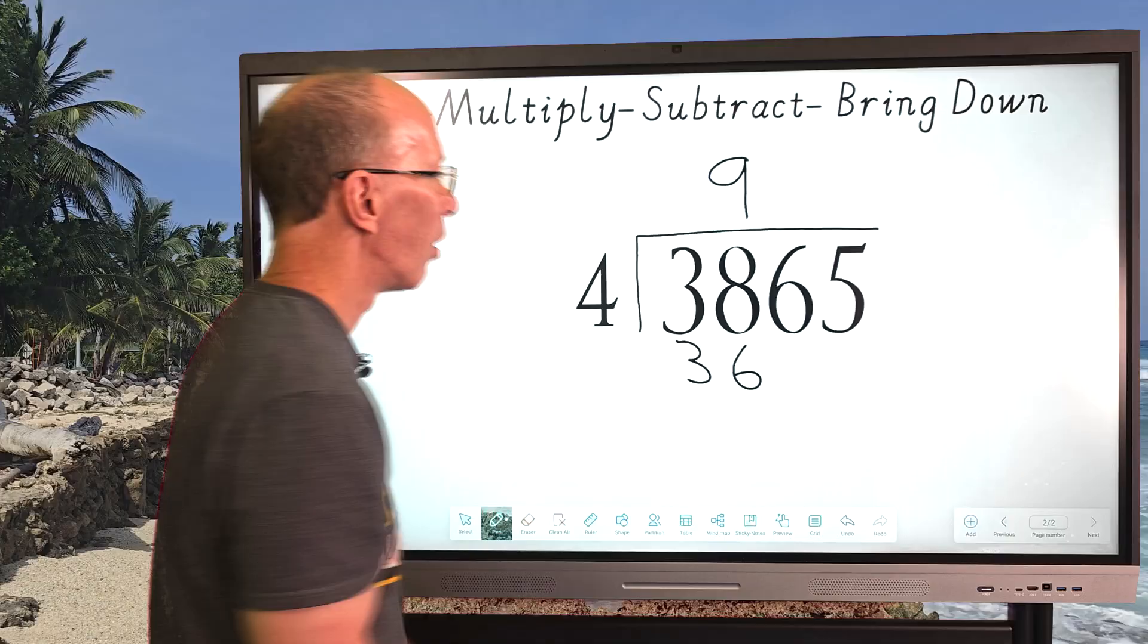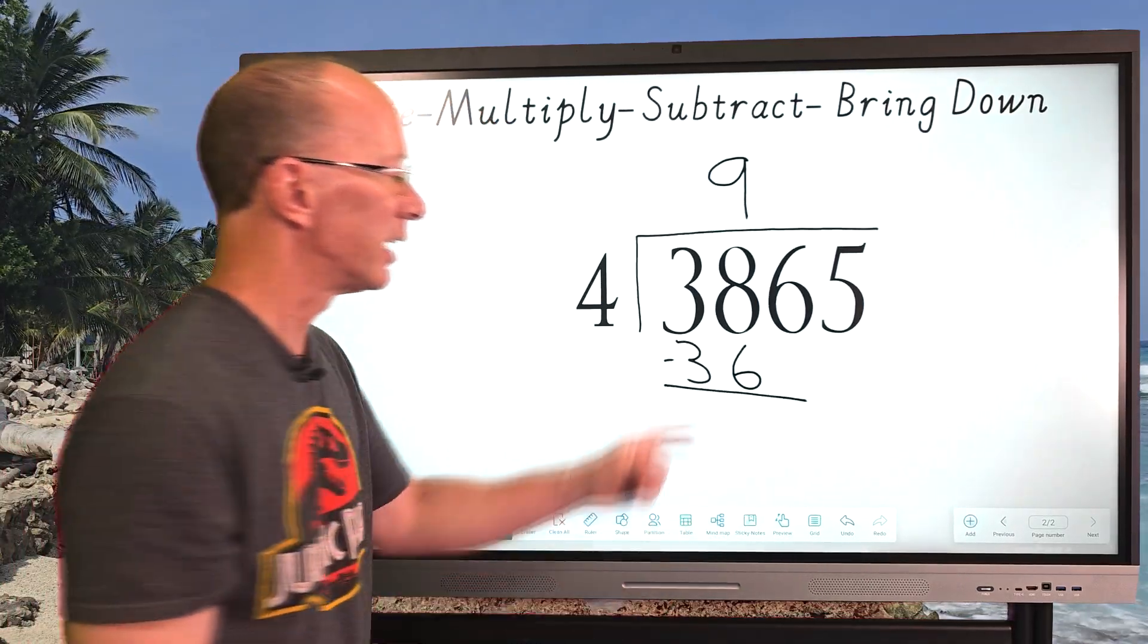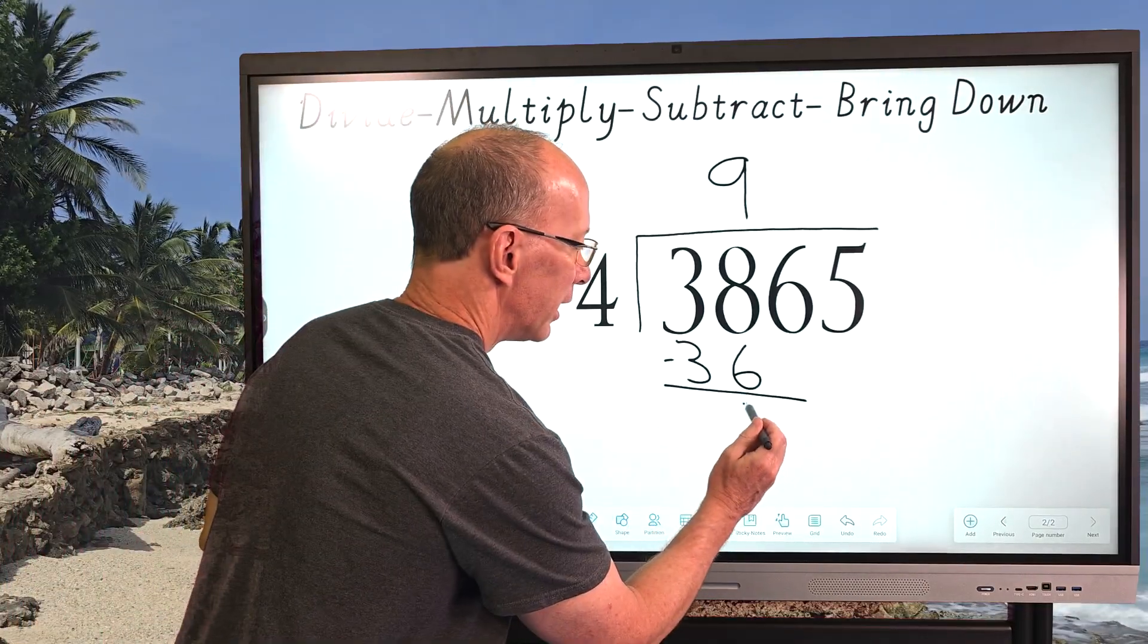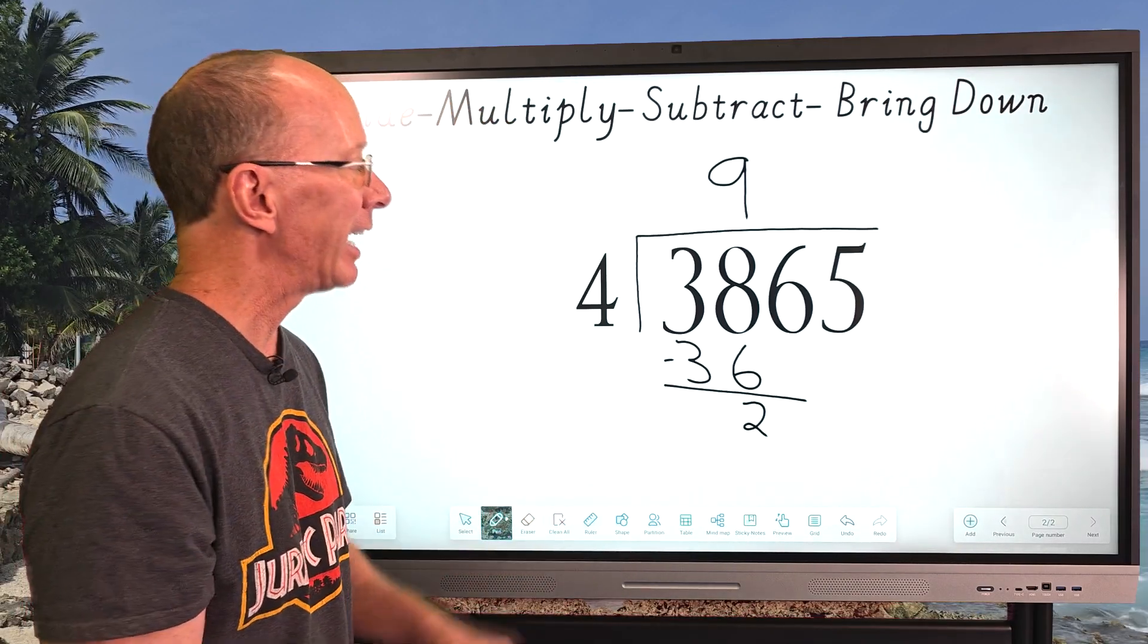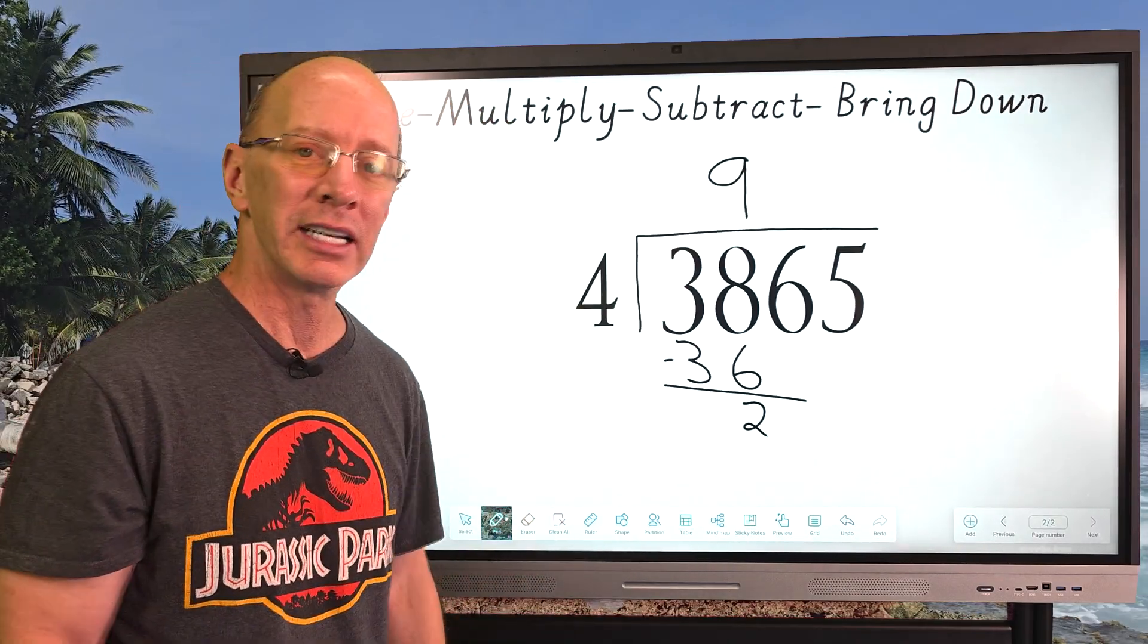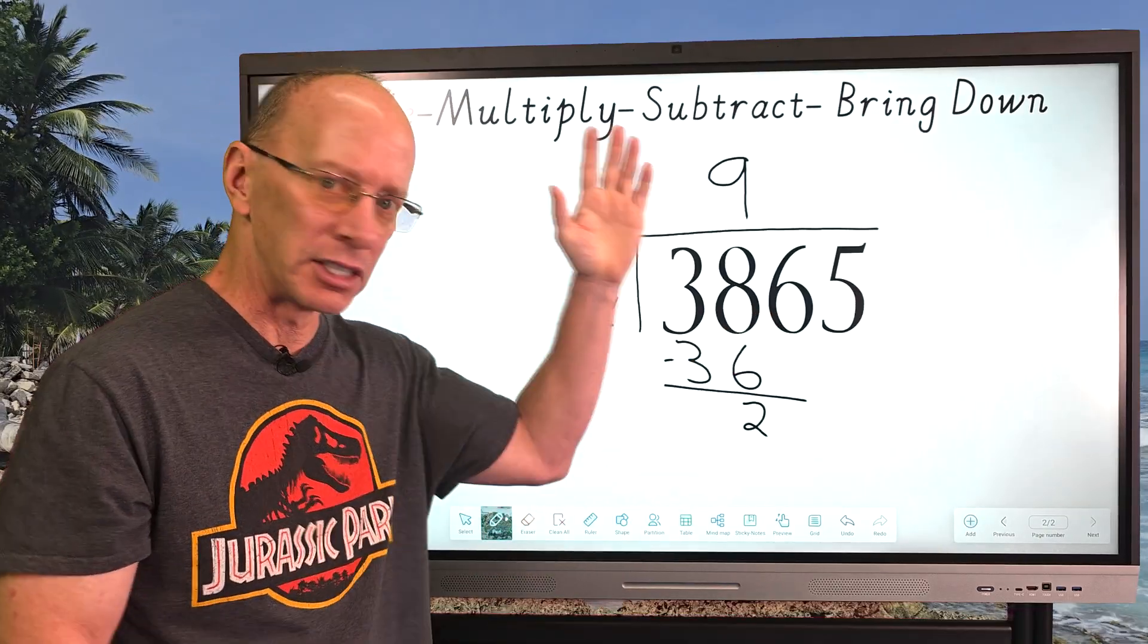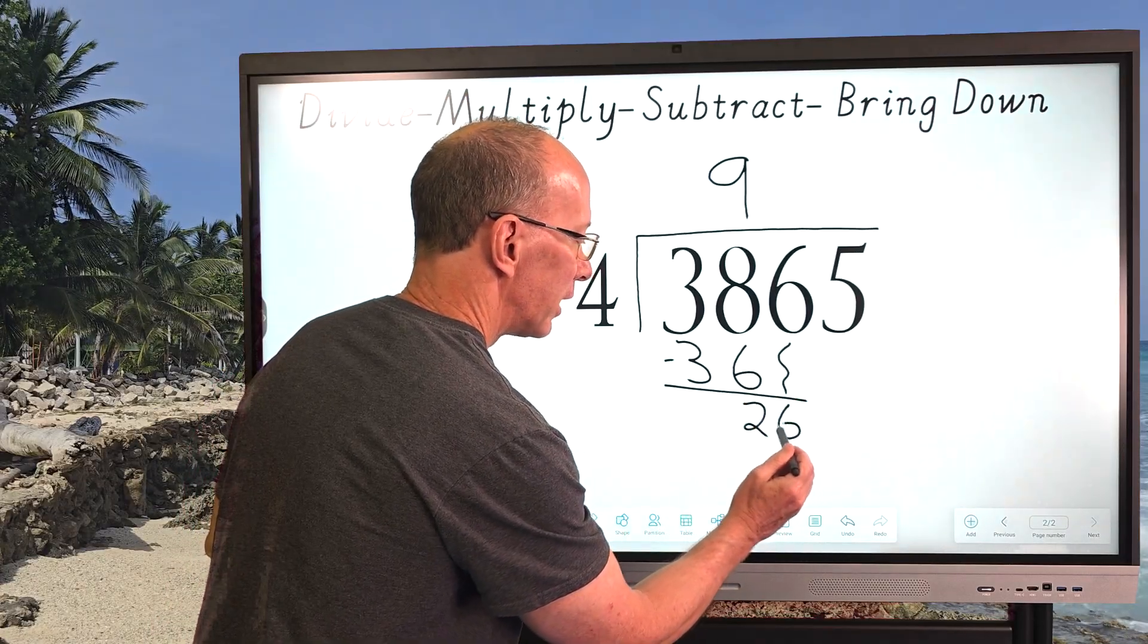And then we're all ready for the next step, and that is subtraction. So let's go ahead and subtract eight minus six. What is eight minus six? Two. And then three minus three is zero. Don't even need to put anything right there. And our next step is to bring the next number down. And the next number would be six. Just going to drop it down. Just drop it all the way down here and put it right there.